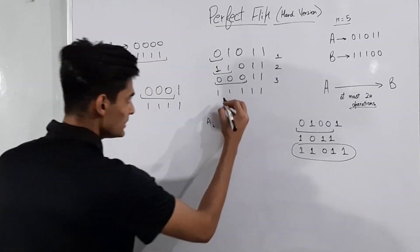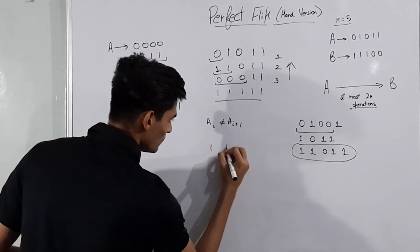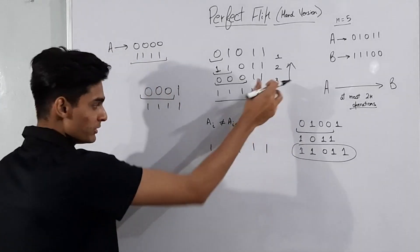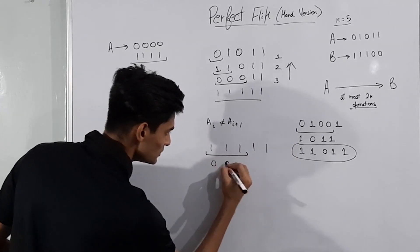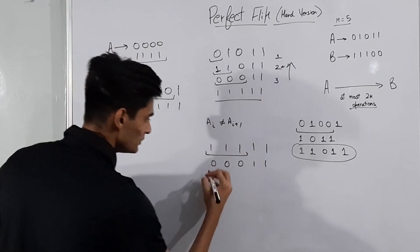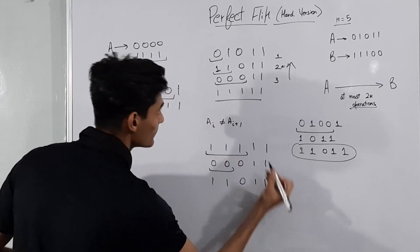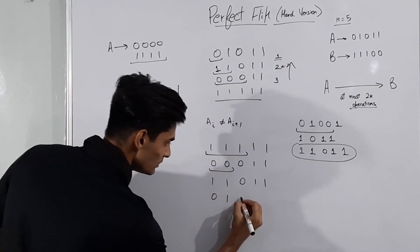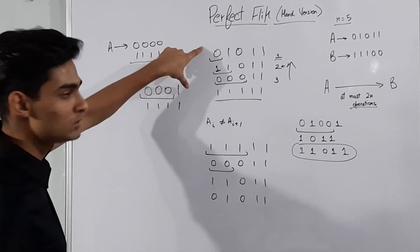Now let's trace back all the operations. We had '11111' and applied the operation of length 3 to get '00011'. Then the operation of length 2 gives '11011'. Then the operation of length 1 gives '01011'. If we look closely, this string is exactly the original string '01011'.